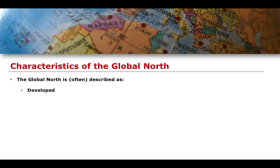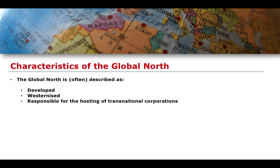The global North is often described as developed and westernized, exhibiting what we would describe as Western values — including democracy, basic human rights, freedom of speech, freedom of press, and freedom of religion. The global North is generally responsible for hosting transnational corporations, with the US, UK, and Europe being home to corporations that operate on a global scale. They are also generally responsible for the majority of trade and investment exports.